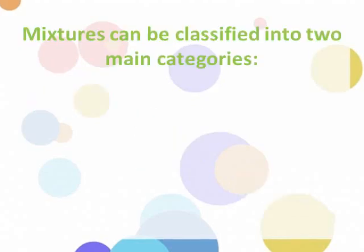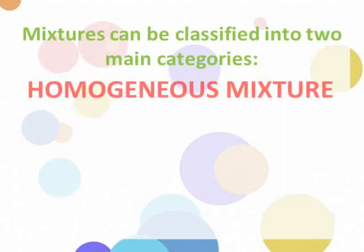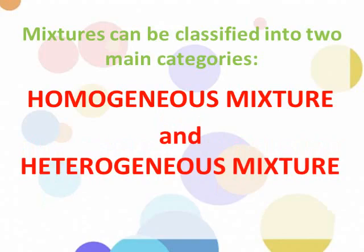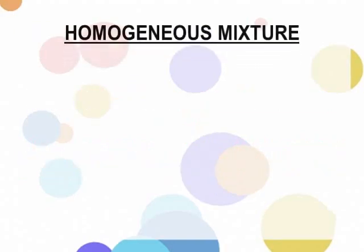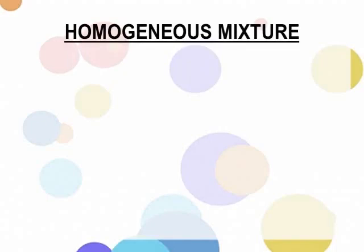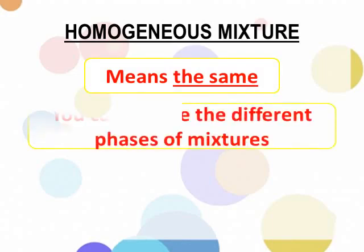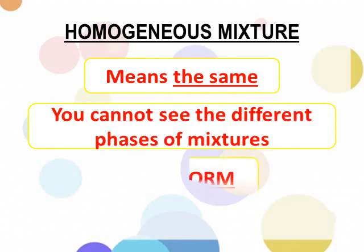Mixtures can be classified into two main categories: homogeneous mixture and heterogeneous mixture. Let us first discuss homogeneous mixture. Homogeneous mixture means the same — you cannot see the different phases or parts of the mixture. Homogeneous mixture is uniform.